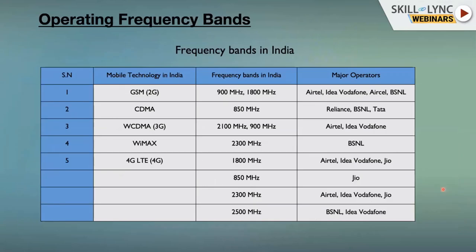Here is a quick glimpse of frequency bands in India. GSM supports 900 MHz and 1800 MHz. CDMA is based on 850 MHz — this can vary country to country. The government has assigned these spectrums for different technologies. 3G wideband CDMA uses 2100 MHz and 900 MHz, with the major operators using those bands. WiMAX — as mentioned, BSNL introduced it in India but it was a flop show — used 2300 MHz. Then we have 4G LTE with multiple spectrums available.